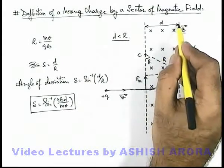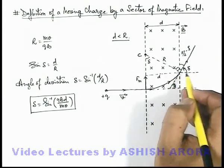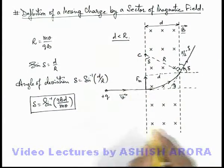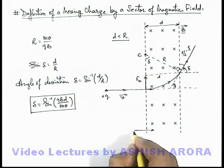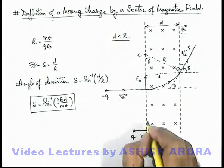Here you can see if this d is more than the radius of the charge particle, it'll not reach the other boundary. It'll complete the semicircle and come out like in this situation. If another charge q moves with velocity v such that v is small.